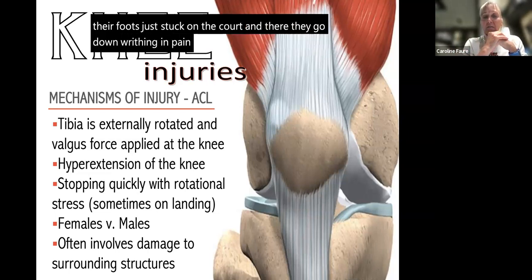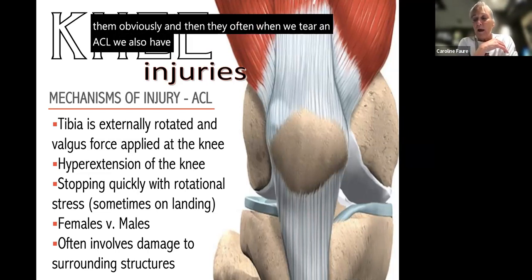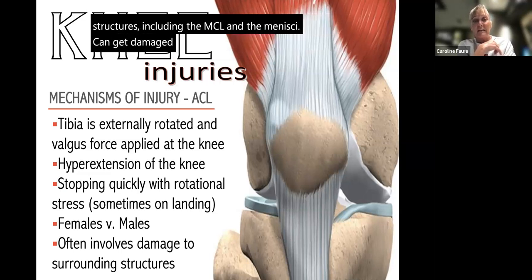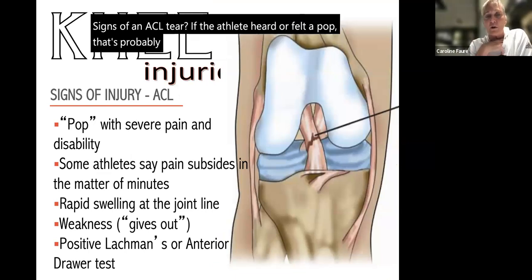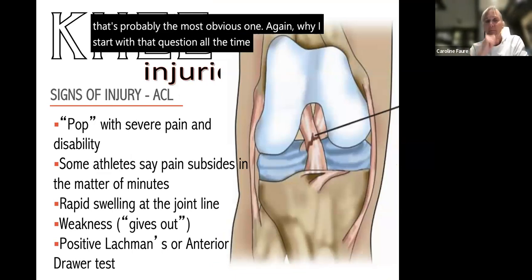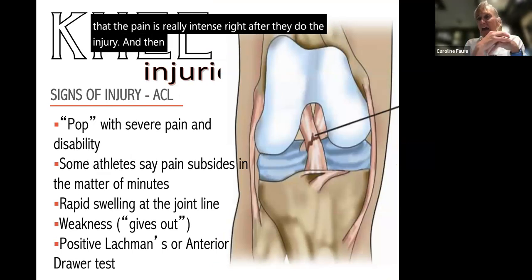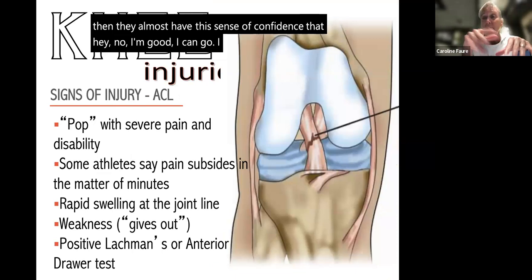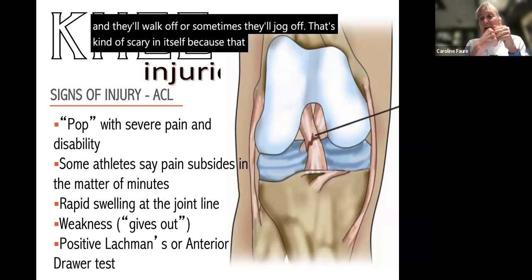Females are more predisposed to ACL injuries than males, though males obviously get them too. When we tear an ACL, we often also damage surrounding structures including the MCL and menisci. Signs of an ACL tear: the athlete heard or felt a pop — probably the most obvious sign. Some athletes experience intense pain immediately after injury, which then subsides after a few minutes, giving them a false sense of confidence that they're okay. This is concerning because the ACL may not be intact.